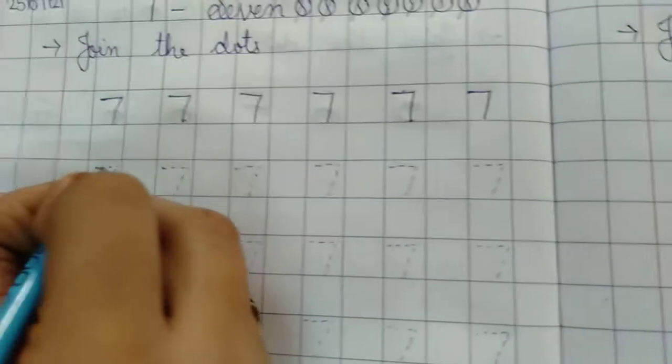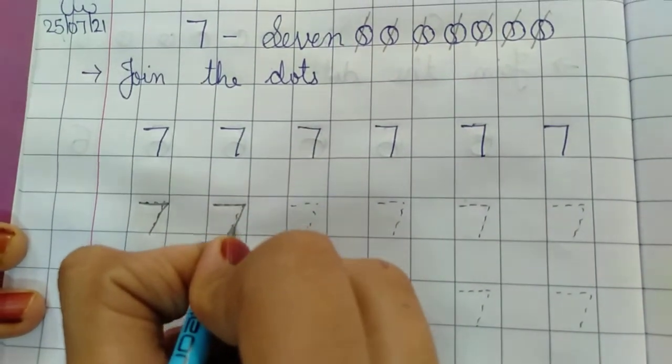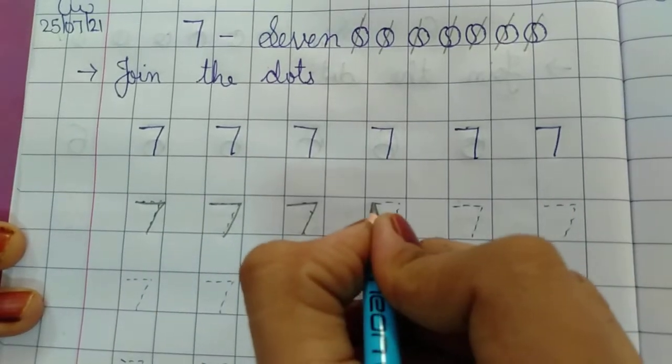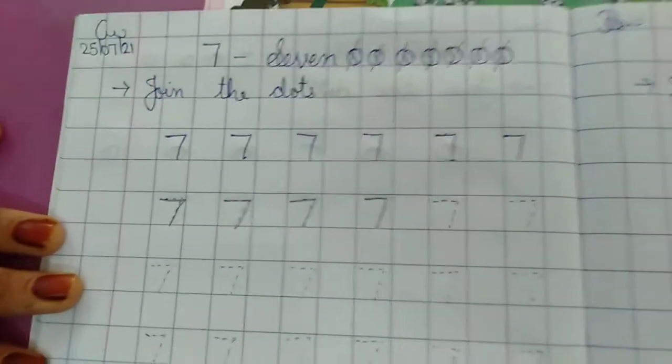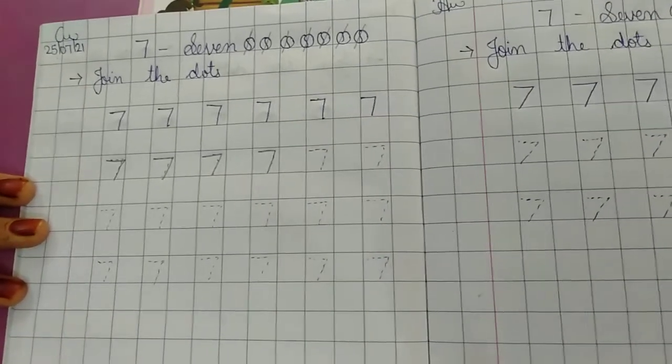Students aapko bol bol ke tracing karni hai. Number 7. Slipping line, slanting line. Number 7. Phele classwork ka page complete karni hai. Aur uske baad homework ka page. Thank you.